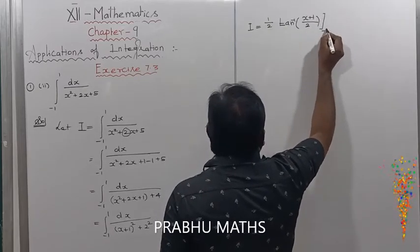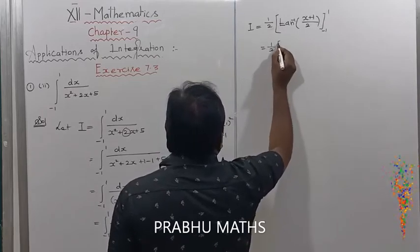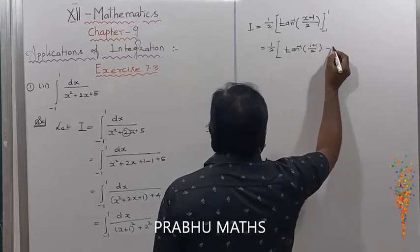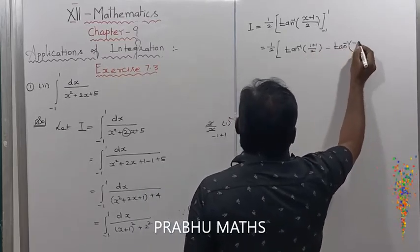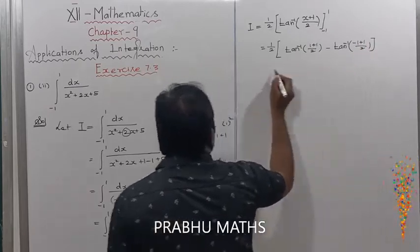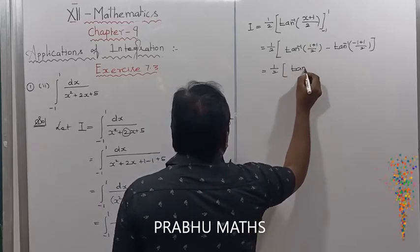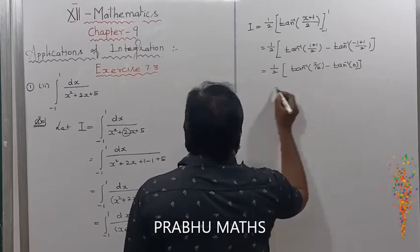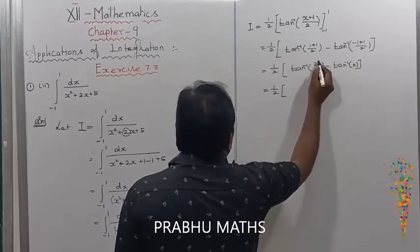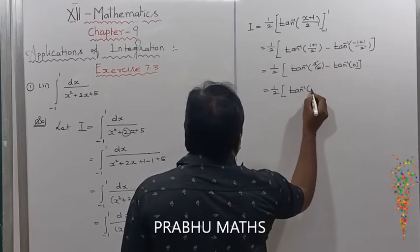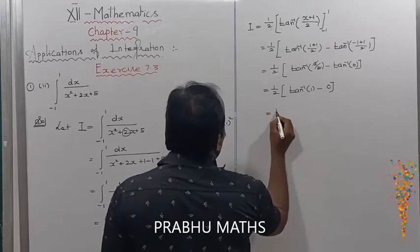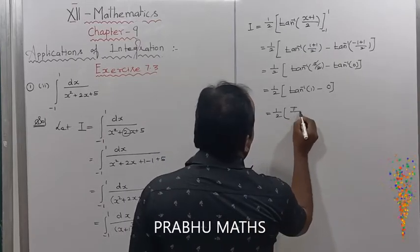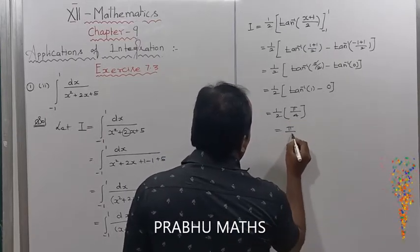So I equals (1/2) times tan inverse of (1 plus 1) divided by 2 (upper limit) minus tan inverse of (minus 1 plus 1) divided by 2 (lower limit). That gives (1/2) times [tan inverse of (2/2) minus tan inverse of 0], which is (1/2) times [tan inverse of 1 minus 0]. Since tan inverse of 1 equals pi by 4, we get (1/2) times (pi/4) equals pi by 8.